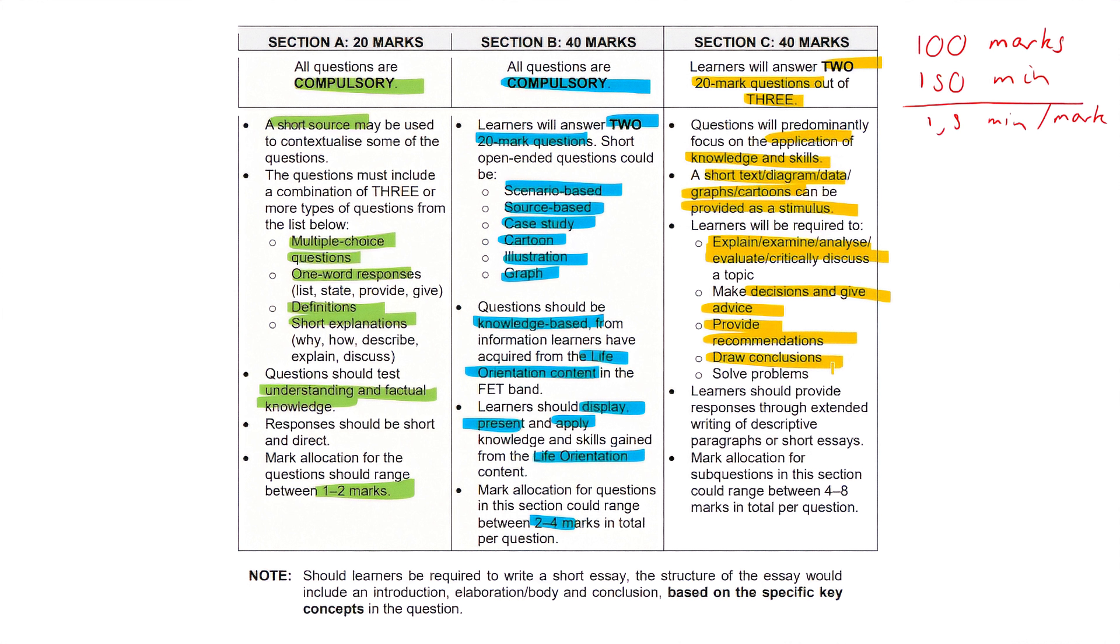Remember, this is an essay. Follow the IBC method intro body conclusion. Remember, you're going to have three bullet points. Address all three. Intro, introduce those three bullet points. Conclusion, tie it all together. And learners should provide responses through extended writing of descriptive paragraphs or short essays. Mark allocation for sub questions in this section could range between four to eight marks. So it's usually four, eight, eight. Four plus eight plus eight is equal to 20. That's how it's usually going to be. And please note down here. Should learners be required to write a short essay, the structure of the essay would include an introduction, a body and conclusion. I, B and C based on specific key concepts in the question.